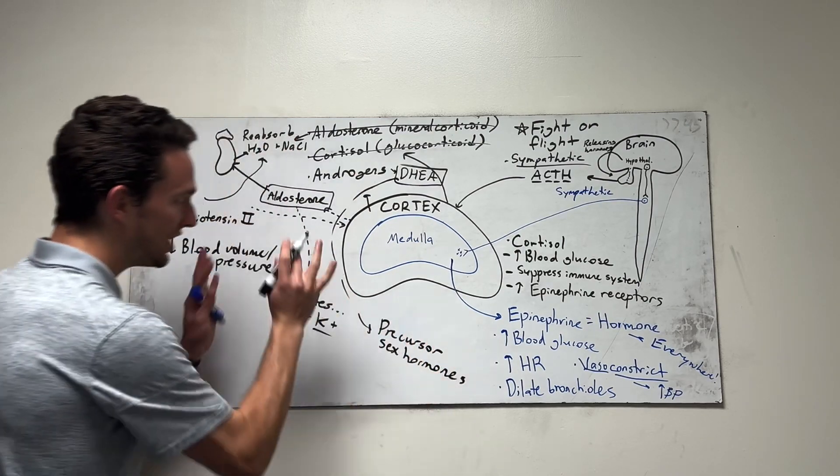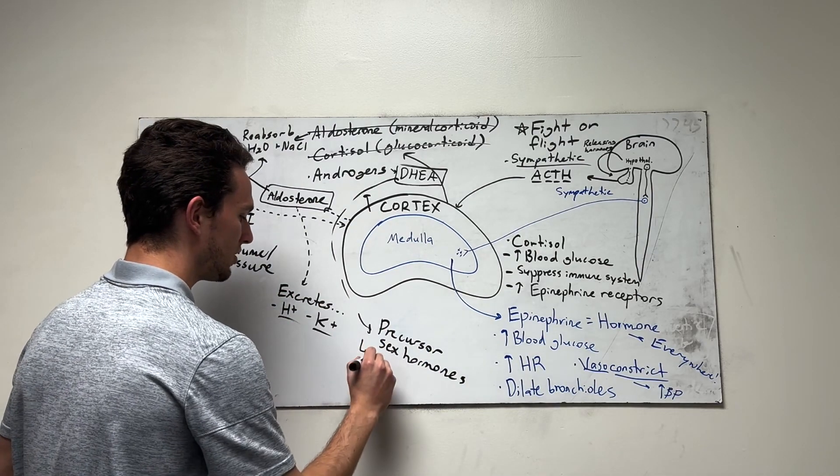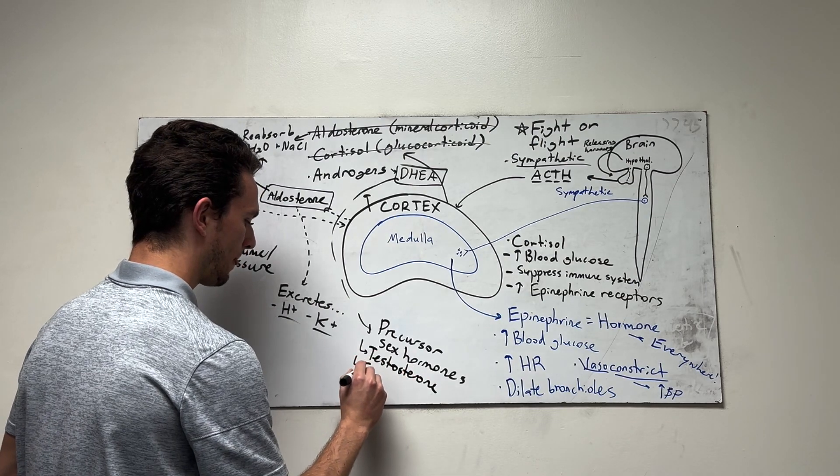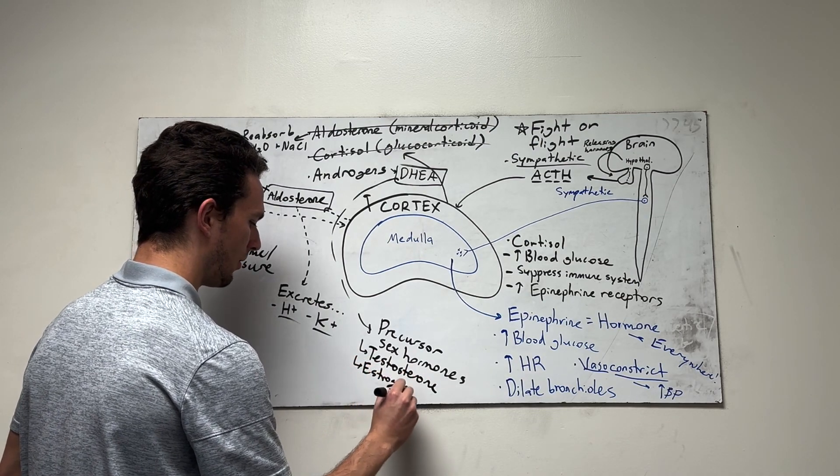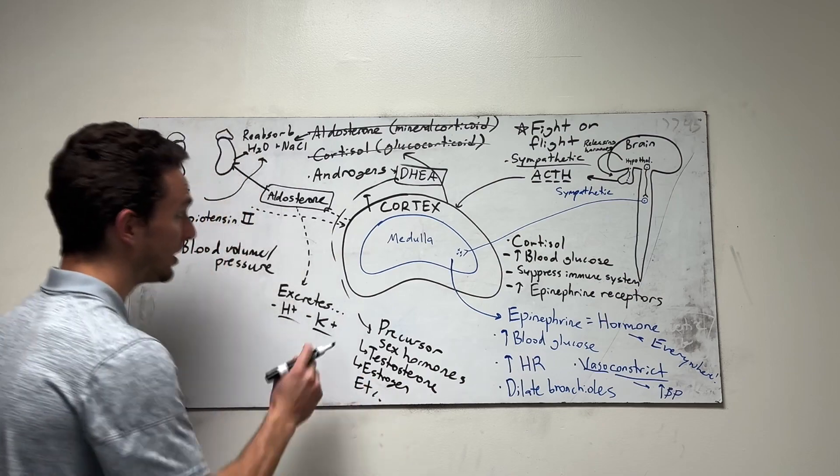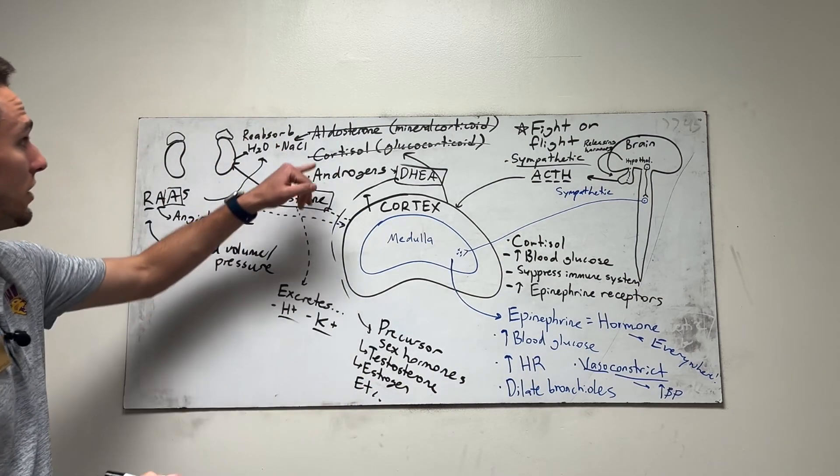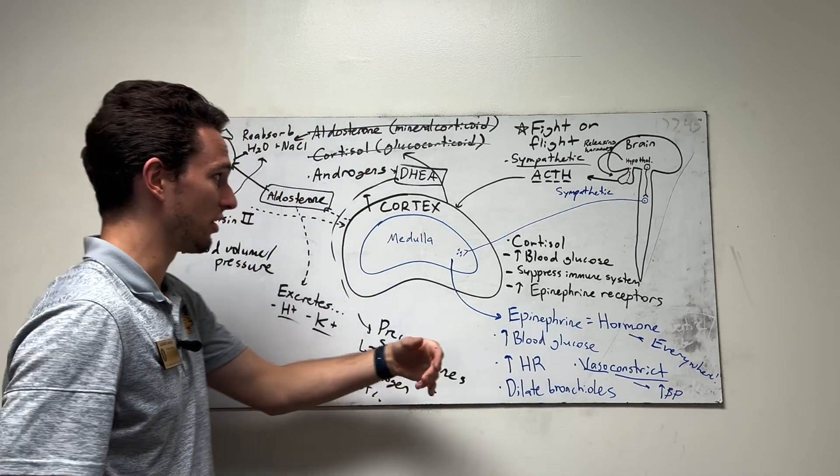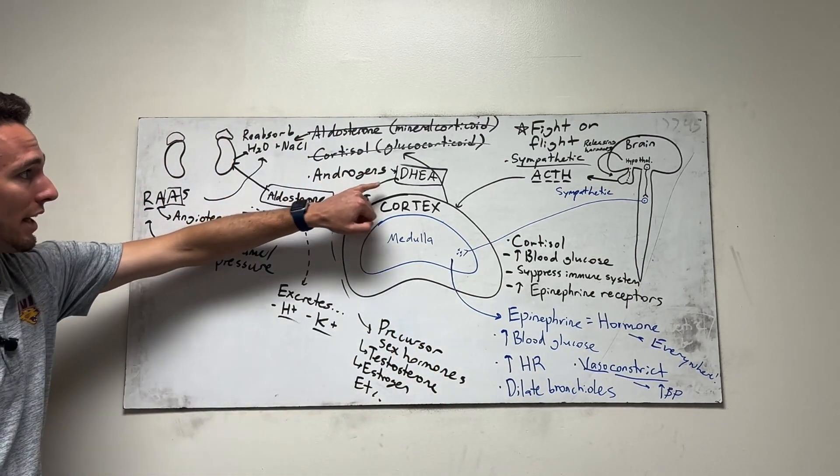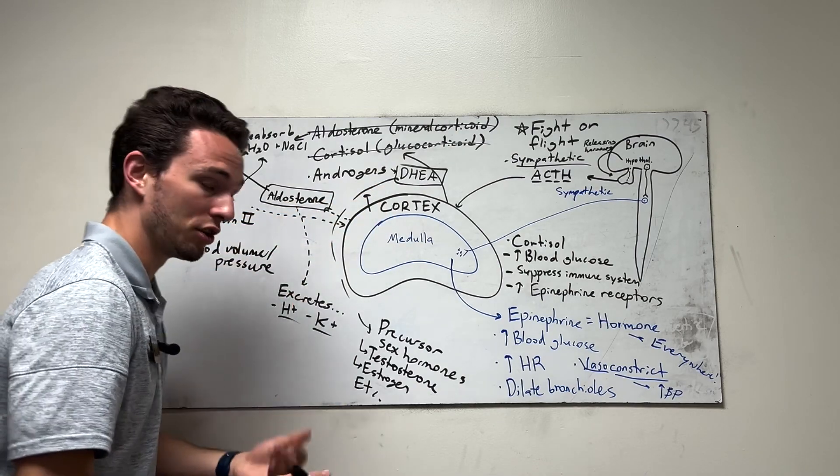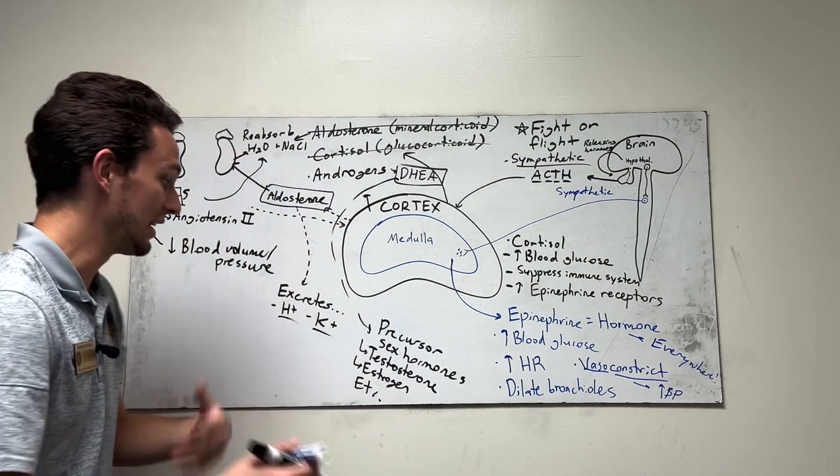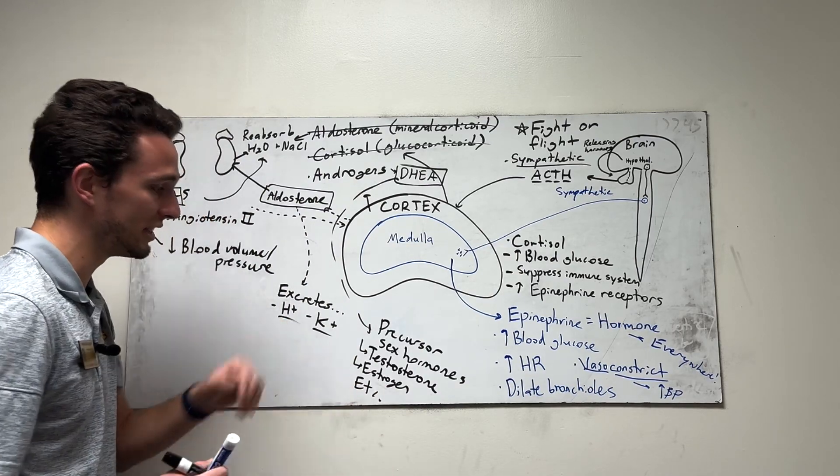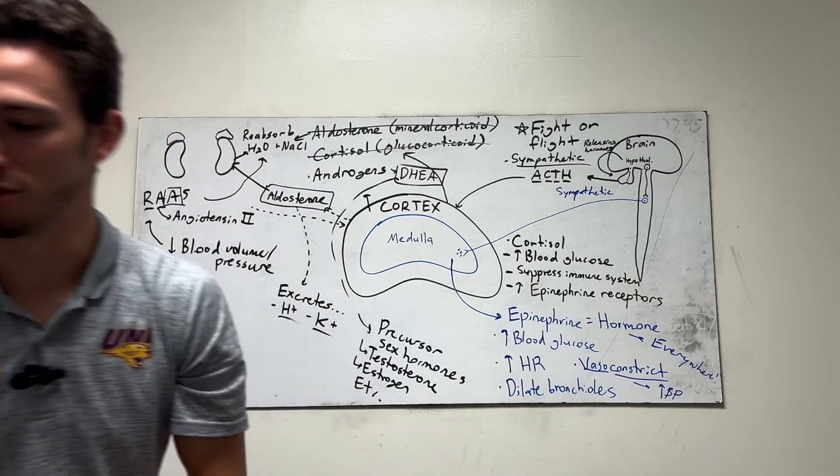So DHEA can be converted to several different things, including testosterone, including estrogen, etc. Because androgens are a steroid-based hormone. In fact, all of these guys are steroid-based hormones. So they're fat soluble. They actually go to the nucleus of cells to make their effect. But in this case, we're going to have a precursor so that say, I don't know, your testes, for example, need some bare bones to work with to produce more testosterone. DHEA can do that.